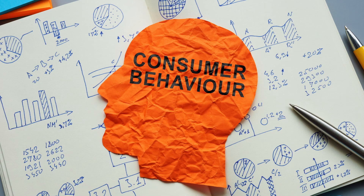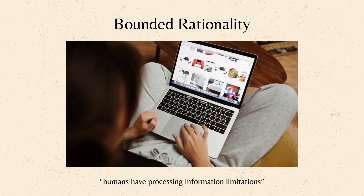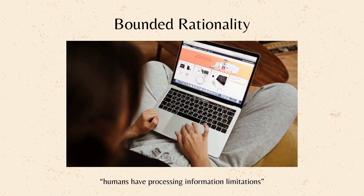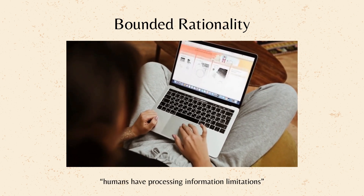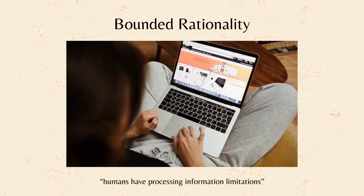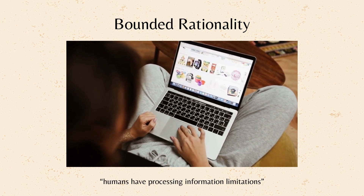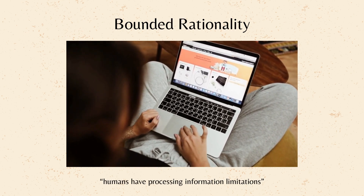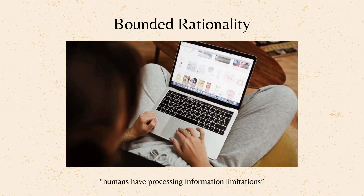Here are some of those factors. Bounded Rationality. Unlike perfect robots, humans have limitations. We can't process all the information and make flawlessly logical decisions every time. This is called Bounded Rationality.